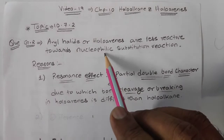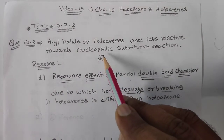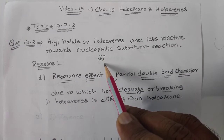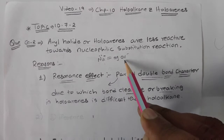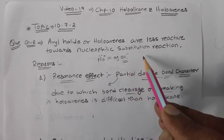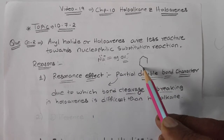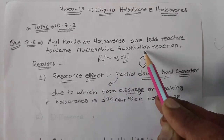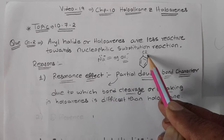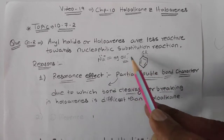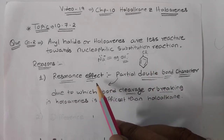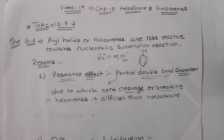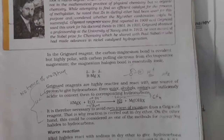A nucleophile is an electron-rich compound. For example, OH⁻ is a nucleophile. If we want to substitute OH⁻ onto a benzene ring that already contains a halogen, it is very difficult — one reason being the resonance effect. This is discussed in your textbook on page 311.